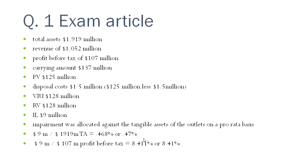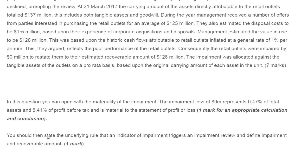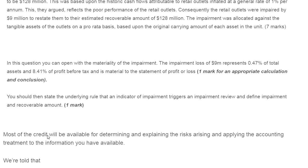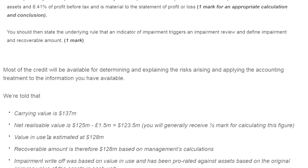The materiality of the $9 million impairment: it represents 0.47% of total assets ($1,919 million) and 8.41% of profit before tax ($107 million), making it material to profit and loss. The fair value less cost of disposal = $125M − $1.5M = $123.5M. Value in use = $128M, which is higher. So the recoverable amount is $128M and impairment loss = $137M − $128M = $9M. In answering the exam question, you should open with the materiality calculation, state whether it is material, and this carries one mark. You should also define impairment, recoverable amount, and identify the trigger.